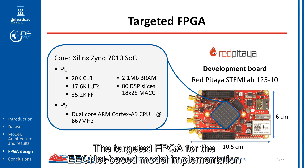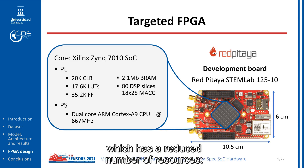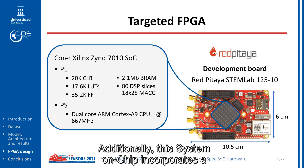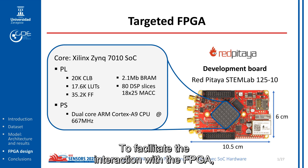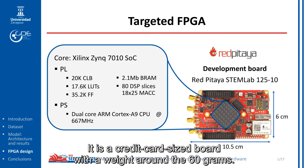The targeted FPGA for the EEGNet-based model implementation is the programmable logic within the Xilinx Zynq 7010 system-on-chip, which has a limited number of resources: 17,600 configurable logic blocks, 2.1 Mb of block RAM, and 80 DSP slices. Additionally, the system-on-chip incorporates a processing system with a dual-core ARM Cortex-A9 CPU. To facilitate the interaction with the FPGA, the PYNQ-Z1 lab board, which incorporates the SoC, has been selected. It is a credit card-sized board with a weight of around 60 grams.